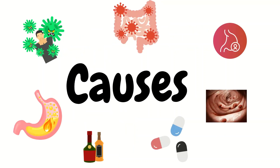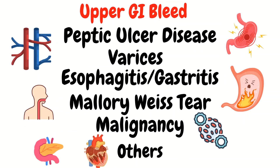Now let's go into some of the causes, starting with the causes of an upper GI bleed. The most common cause of an upper GI bleed is going to be peptic ulcer disease. Then you also have varices, which can either be esophageal or gastric varices. Remember that your liver patients who have increased portal hypertension are at an increased risk for varices related to the increased pressures and the backup of blood.